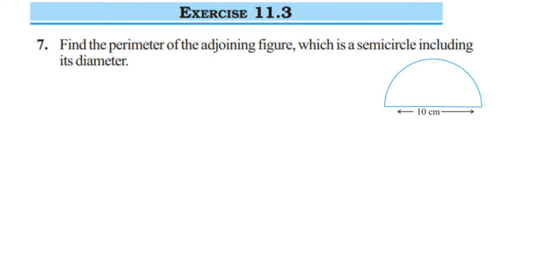Hey everyone, here I am doing Exercise 11.3, question 7. This is from the perimeter and area chapter of class 7. The question is: find the perimeter of the adjoining figure, which is a semicircle including its diameter. So they have given the diameter.